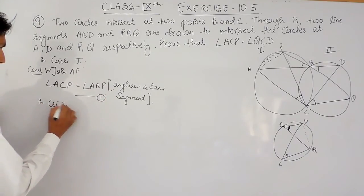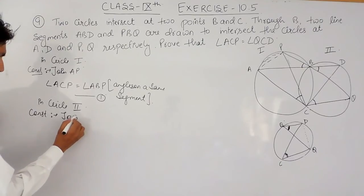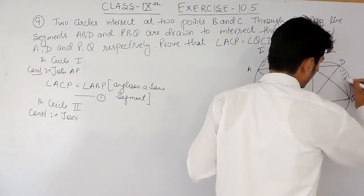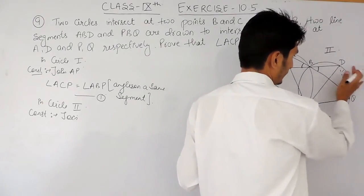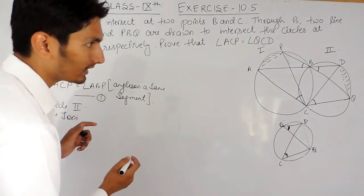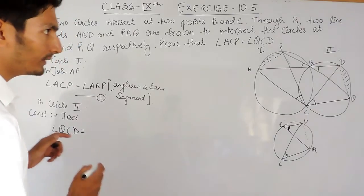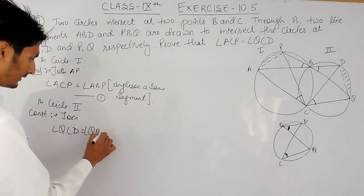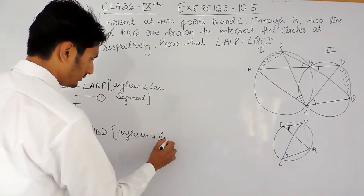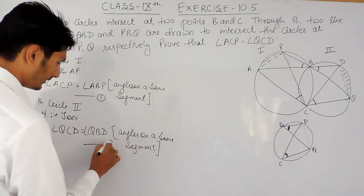In circle two, join DQ. Again, this divides the circle into two parts — the minor segment and the major segment. These two angles are on the major segment. So angle QCD will be equal to angle QBD. The reason is the same: angles on the same segment. This is our second equation.